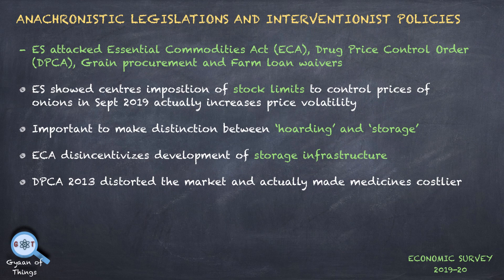The Economic Survey has criticized anachronistic legislations and interventionist policies such as the Essential Commodities Act, Drug Price Control Order, grain procurement, and farm loan waivers. The survey shows that imposing stock limits increases price volatility, and a distinction needs to be made between holding and storage. These policies distort markets, hinder private investment, and obstruct infrastructure creation.